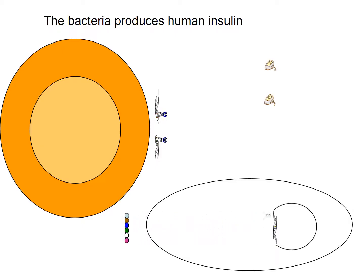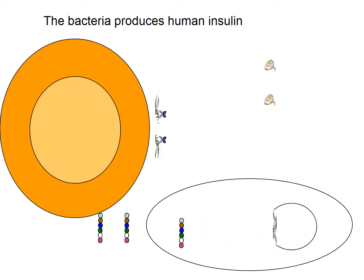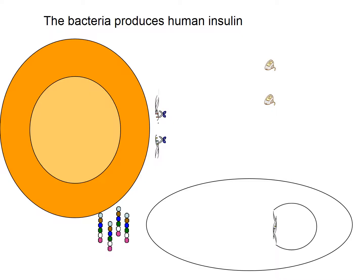As the bacteria grow, they will continue to make this human insulin and secrete it — releasing it out of the bacteria into a solution, and this is what we'll be after. The human insulin in the solution can be processed for human use. To clarify: the bacteria are not going to be injected into humans, but the insulin that they produce can be injected to control blood sugar.